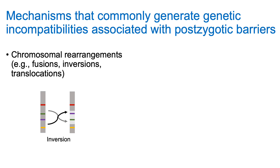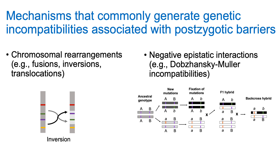There are two mechanisms commonly implicated in the evolution of genetic incompatibilities and postzygotic isolation: chromosomal rearrangements like fusions, inversions, or translocations, and negative epistatic interactions. With chromosomal rearrangements, if two lineages diverge in gene-order collinearity or synteny along homologous chromosomes, it can cause problems with chromosome pairing and crossing over during meiosis, suppressing recombination. Negative epistatic interactions can occur when new alleles arise in each of two diverging lineages with no negative impact on fitness within each lineage, but result in decreased fitness when brought together through hybridization.